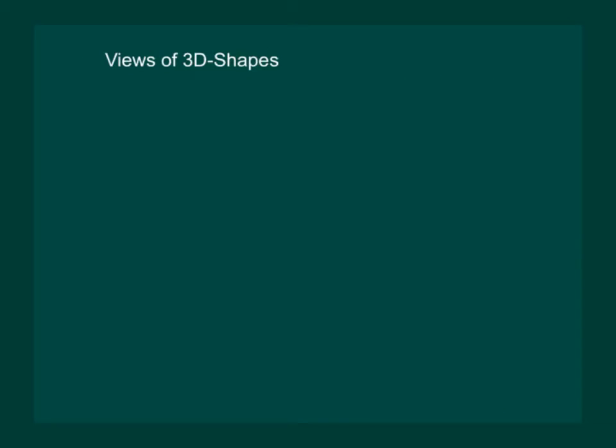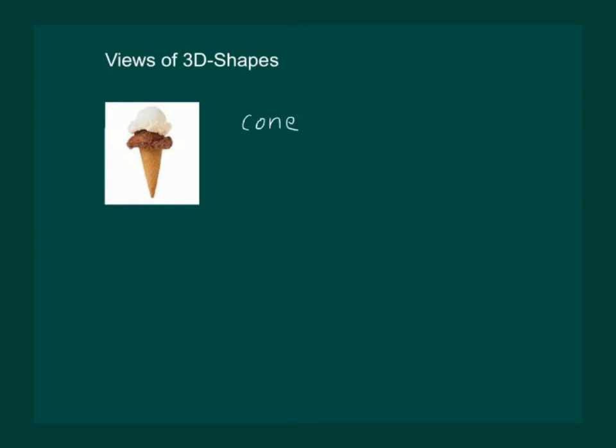We discussed 2D and 3D shapes. However, in our practical life, we come across combination of different shapes. For example, consider an ice cream cone. We can see that it looks like a cone surmounted by a hemisphere. Hence, it is a combination of a cone and a hemisphere.